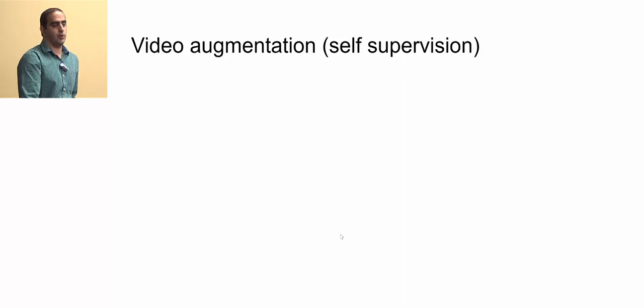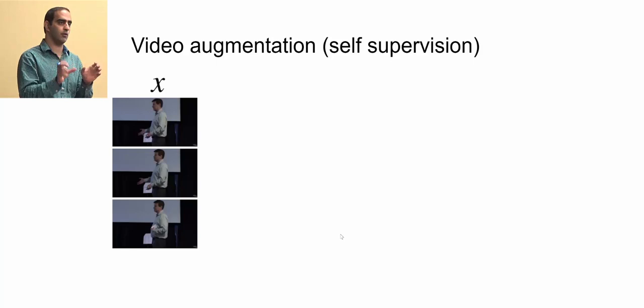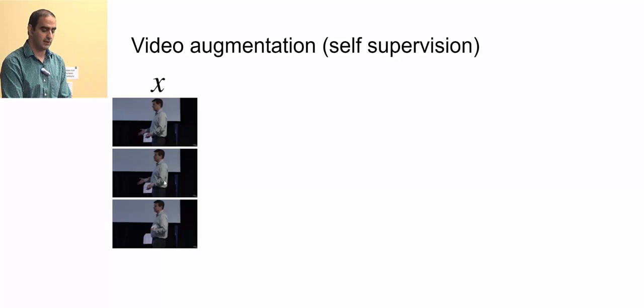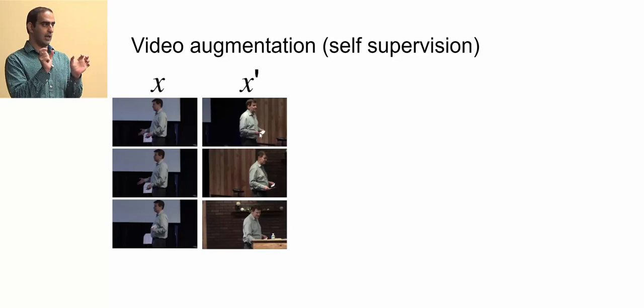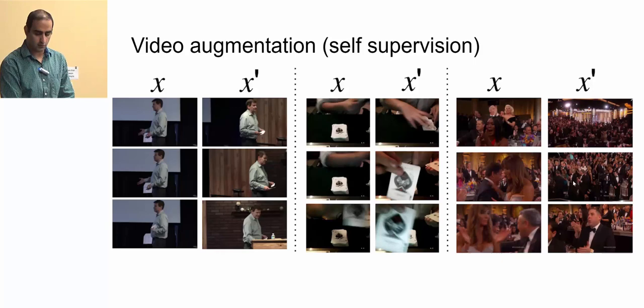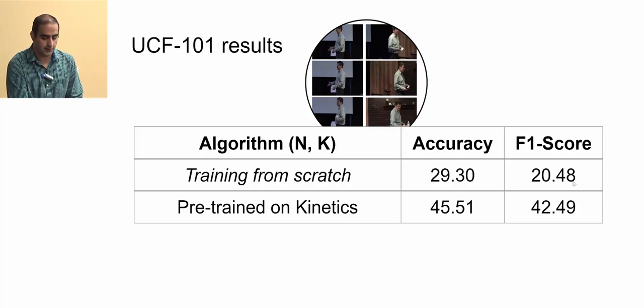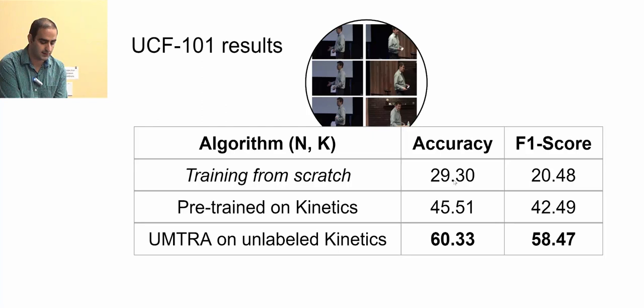For the video domain, we use temporal sampling as augmentation: since videos are clips, we pick two different temporal segments of the same video clip — one for training and one for validation. For example, different temporal windows from a person giving a talk or playing cards. On UCF101, UMTRA on unlabeled Kinetics gives very good results, outperforming pre-trained transfer learning and approaching supervised MAML.